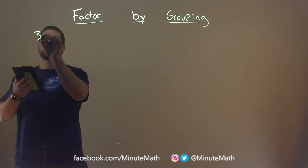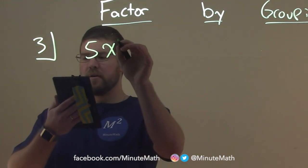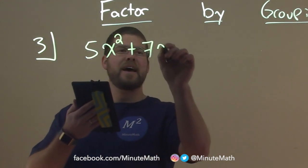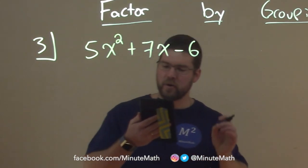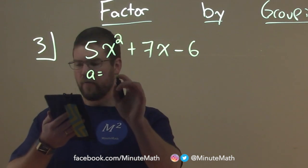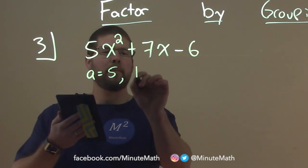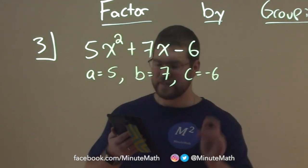So, let's go to Example 3. We're given 5x² plus 7x minus 6, and we want to factor this by grouping. So, we have a trinomial. We have an A value of 5, a B value of 7, and a C value of negative 6.